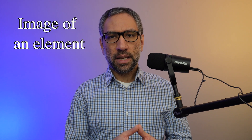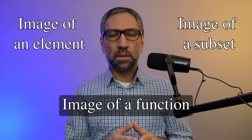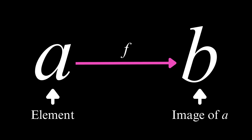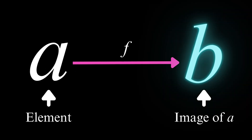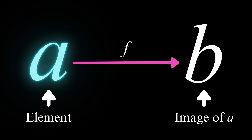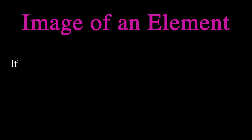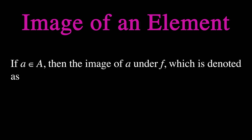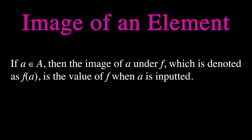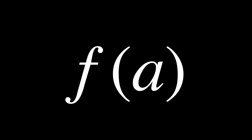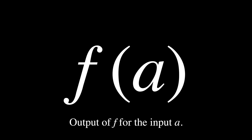Let's delve into the image first. Image may refer to three possible scenarios: the image of an element, the image of a subset, and the image of a function. Let's first consider the image of an element. An image of an element refers to the output of a function when the element is used as an input. More specifically, if a is an element of A, then the image of a under f, denoted as f(a), is the value of f when a is inputted. This value f(a) is known as the output of f for the input a.